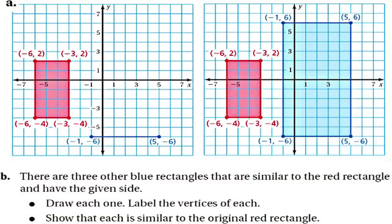Let's look at activity one, part A on page 206. You see a red rectangle and a blue rectangle. What is the length of the red rectangle? Six. And the width? Three. What is the length and width of the blue rectangle? The length is twelve and the width is six.